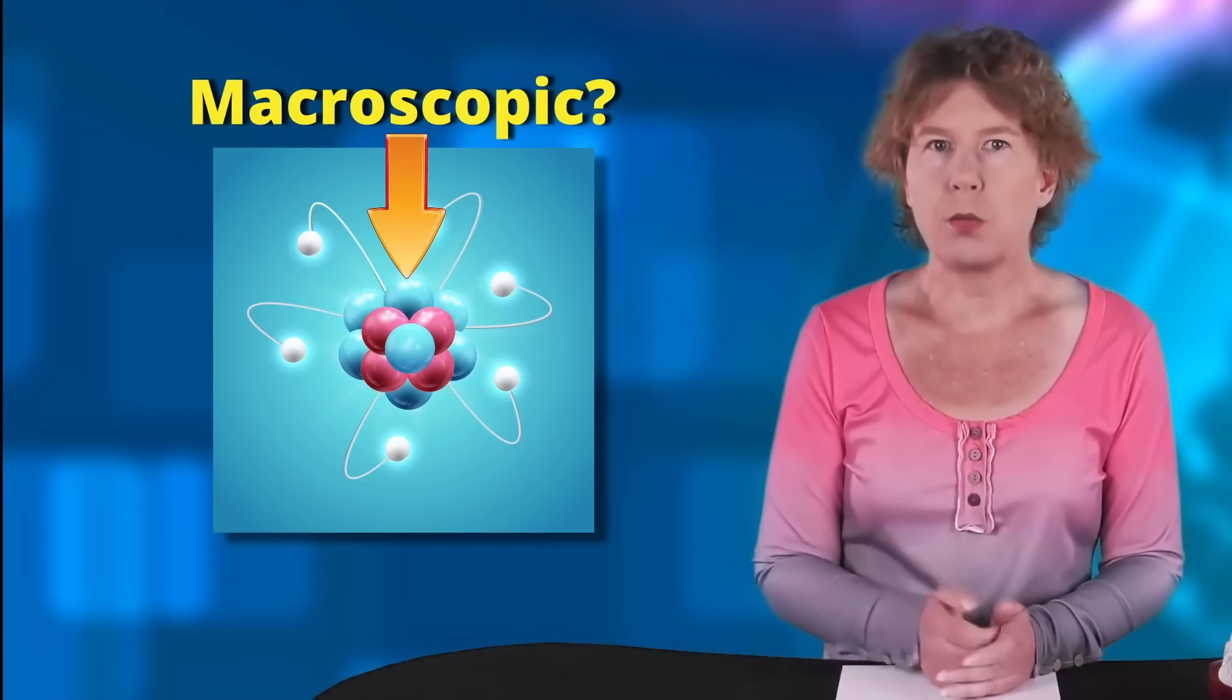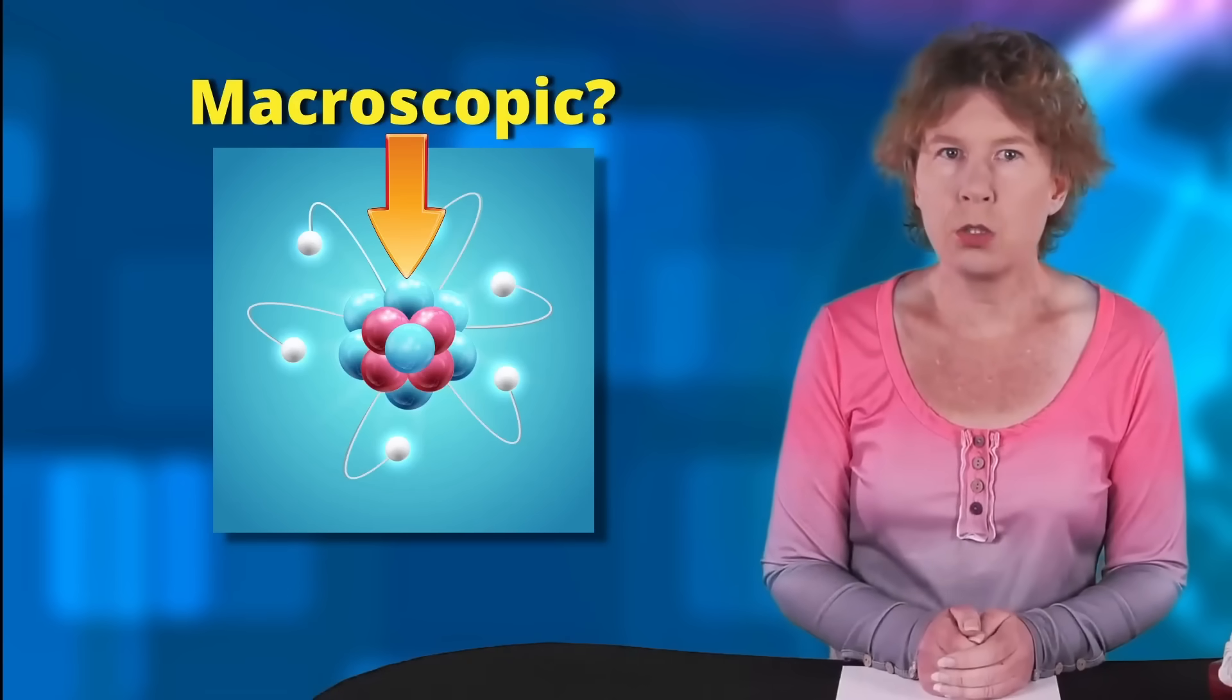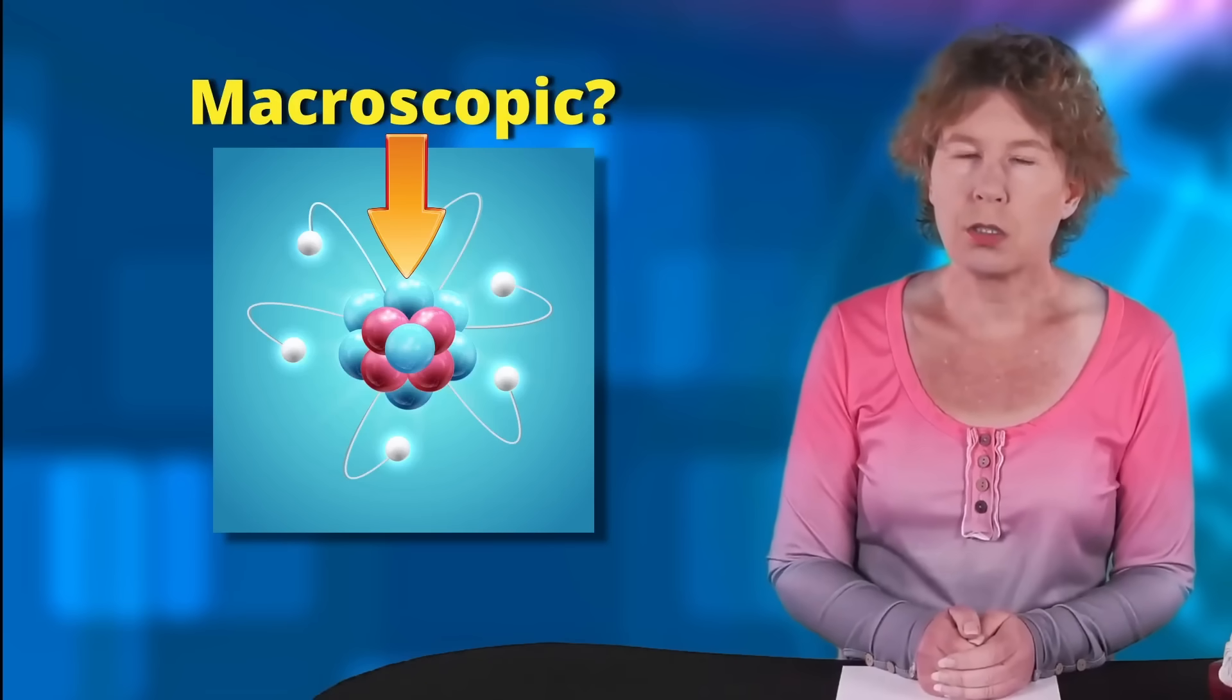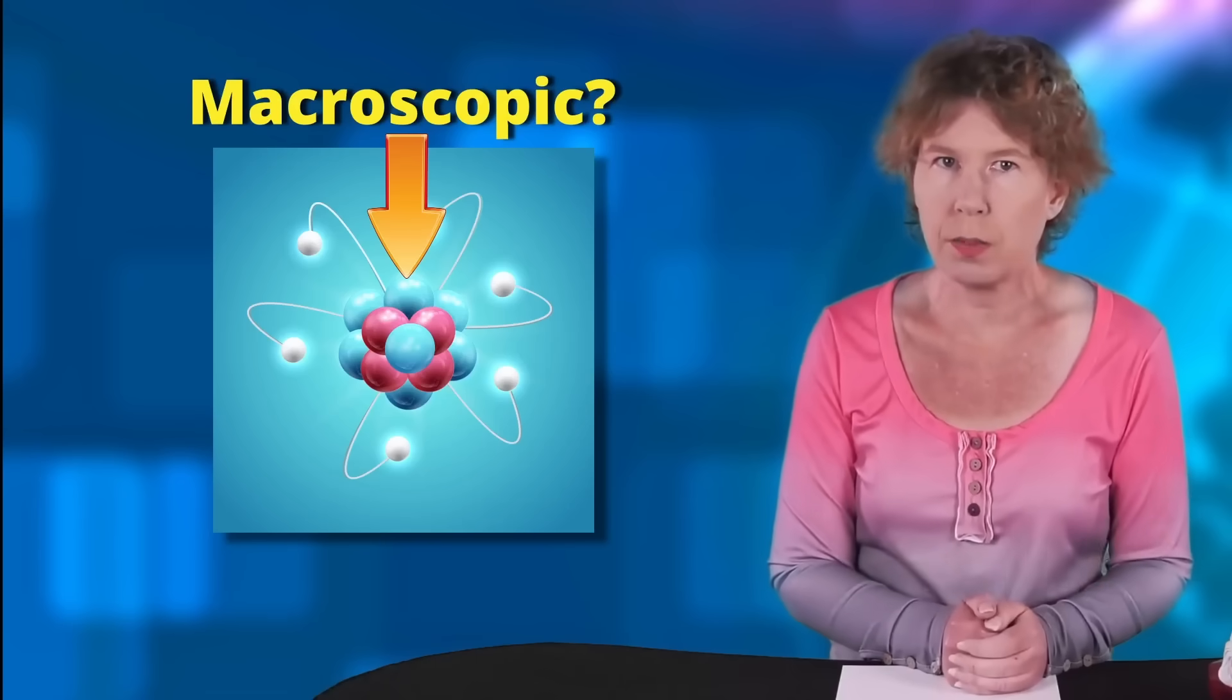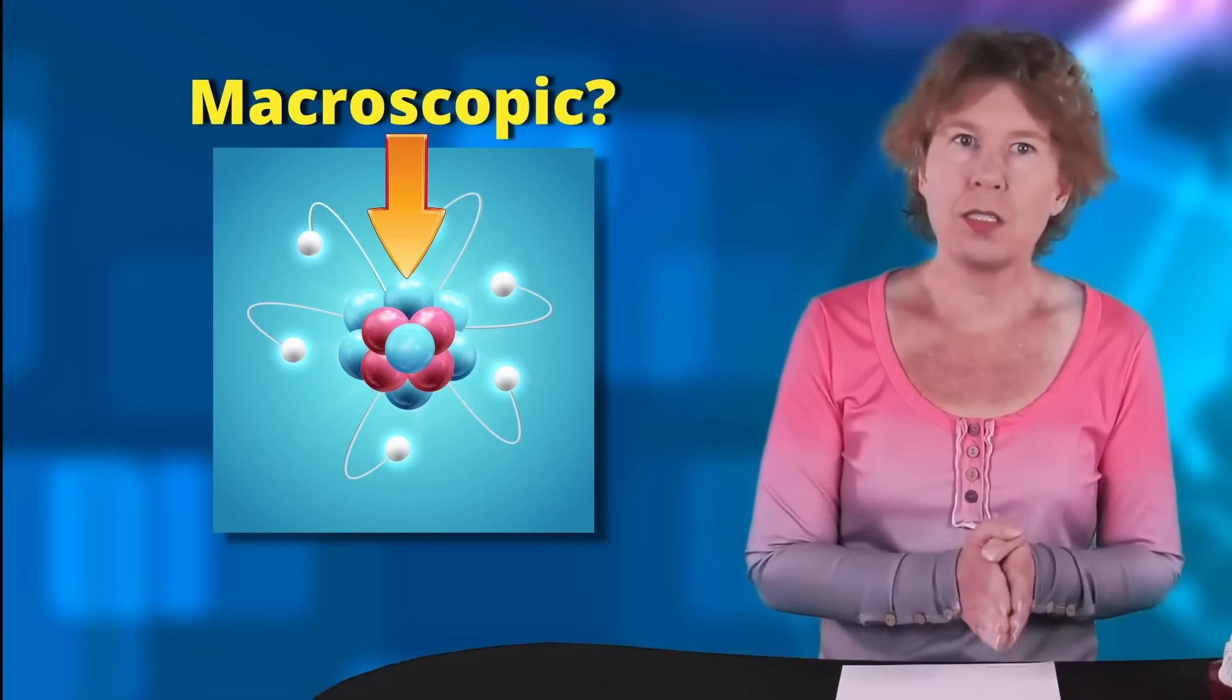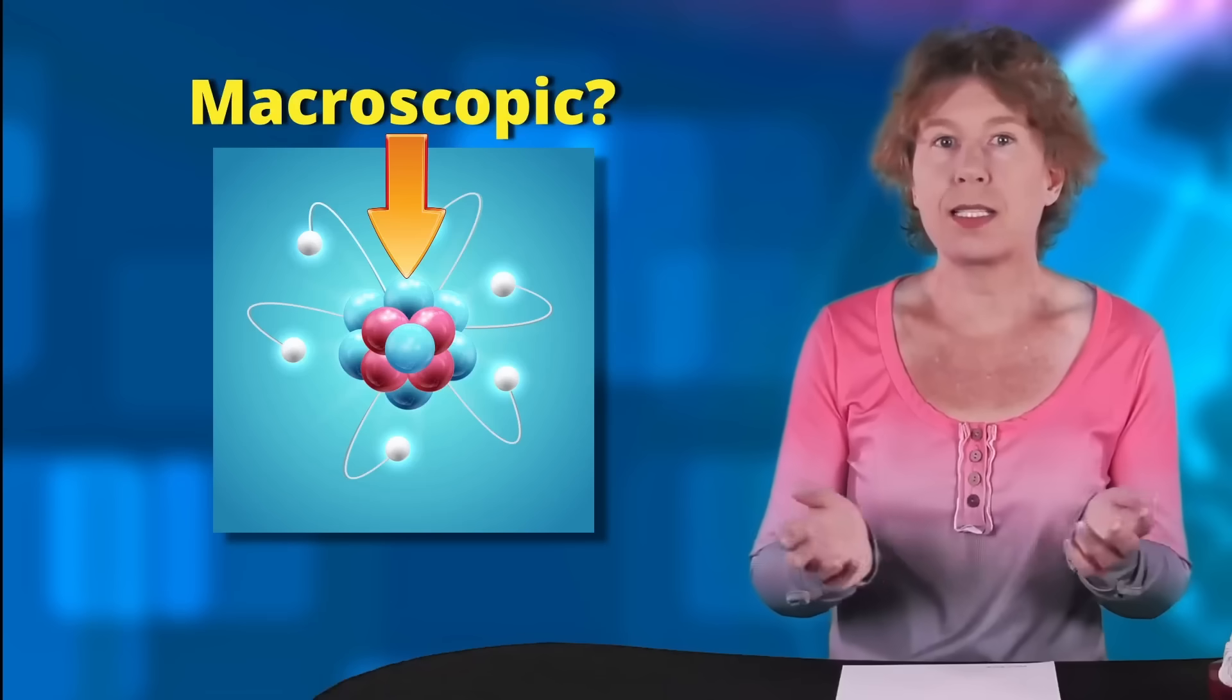But it turned out that what they mean by macroscopic is a neutron. Yes, a neutron, a particle so small you can't even see it in a microscope. And the only thing they did with it was to show that it has quantum properties. Why does this stuff get published?